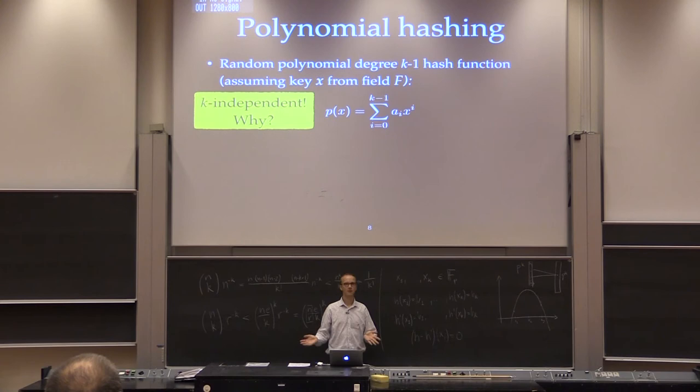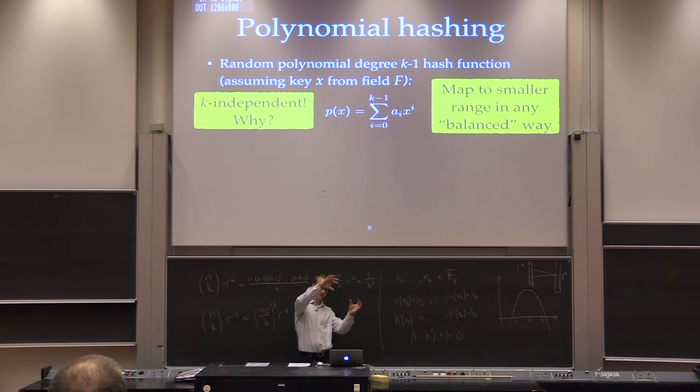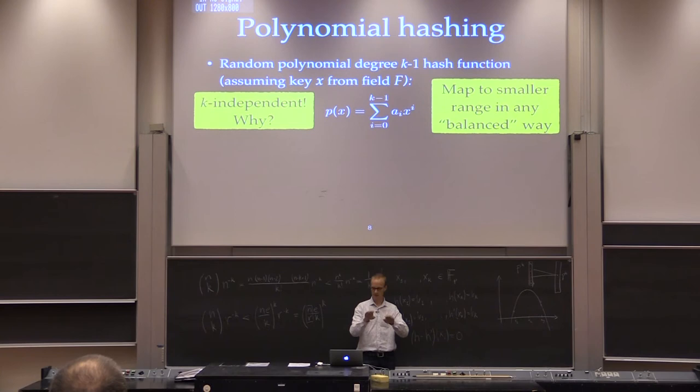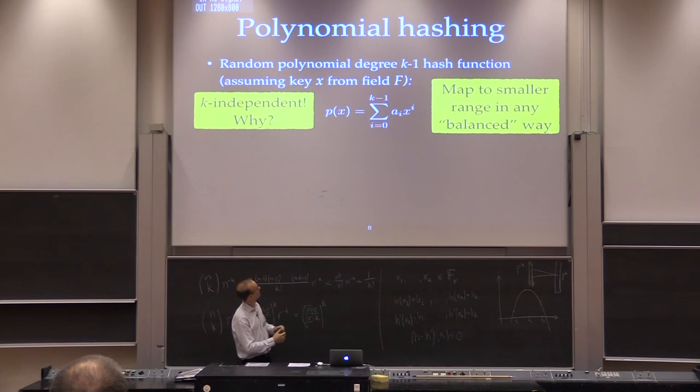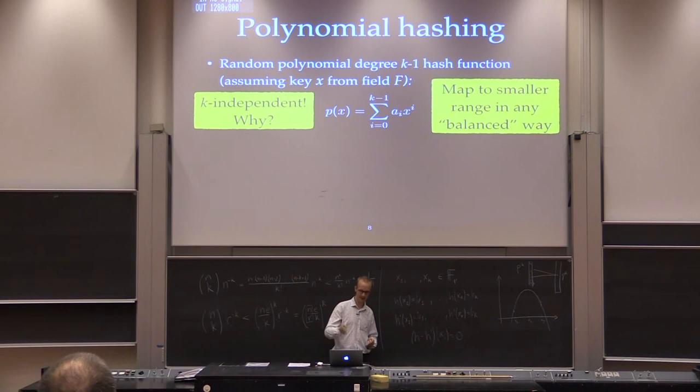Usually when you're hashing you want a reasonably small output value. Here maybe the field has a size of many billions. The solution, which you've probably all seen, is to map down with a modular function or any balanced way to map big random values to smaller ones. When you do this, maybe you don't get complete uniformity, but it's going to be very close. If you want to evaluate this, you should use smart ways of evaluating the polynomials — certainly not by computing x to the i by multiplying x by itself i times.